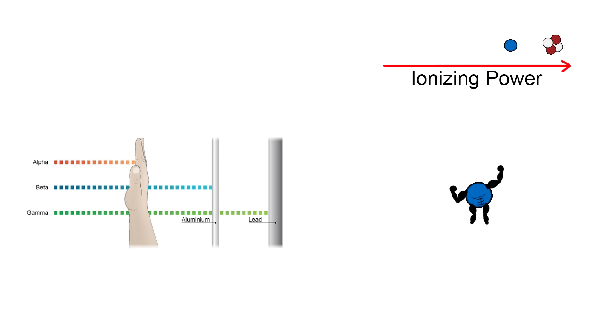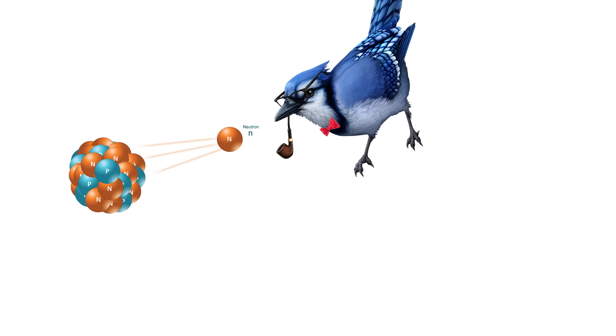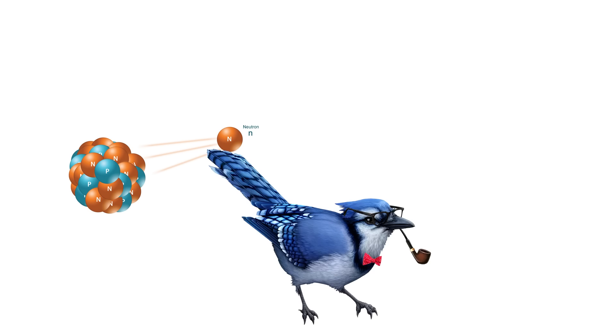Emitted beta particles, which are just electrons, are weebs that aren't as far gone as alpha particles, as they still found time to touch grass every once in a while, and therefore are less massive. A bit more in shape, they are the second most ionizing, able to penetrate half an inch of your skin, and are stopped with just a thin plate of metal.